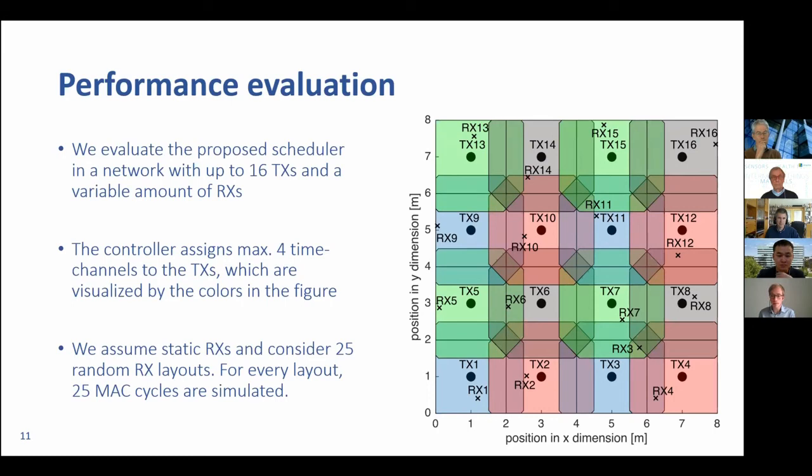This brings me to the performance evaluation. We evaluate our scheduler in a network with up to 16 transmitters and a variable amount of receivers, whereby the controller assigns time channels to the transmitters with a maximum of four time channels. We have shown that four time channels are enough in a rectangular grid. These time channels are visualized by the colors: blue, red, green, and gray. We assume static receivers and consider 25 random layouts, and for every layout we investigate 25 subsequent MAC cycles.